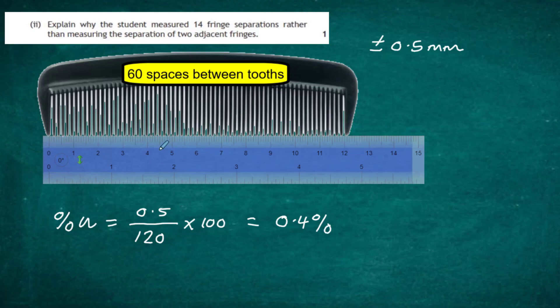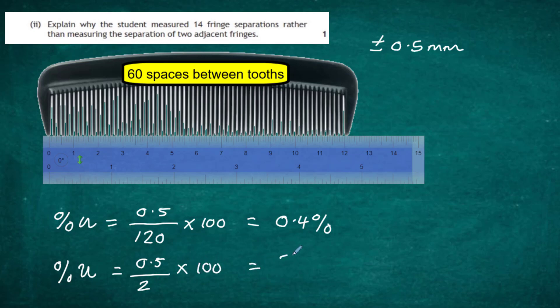If we measure just one space — about 2 millimeters — the percentage uncertainty is 0.5 divided by 2, times 100, which is 25 percent. So measuring over 60 spaces is the best way to reduce uncertainty. To sum up: the student measures 14 fringe separations rather than one because it's easier and it drastically reduces the uncertainty in the final answer.